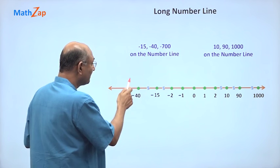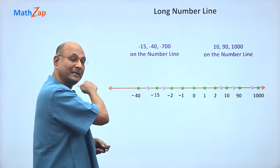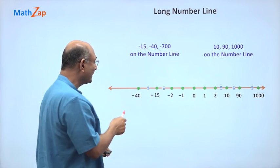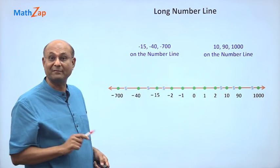What about minus 700? Minus 40, minus 50, minus 60, minus 70. If you keep going, minus 700 will come way down. So we put a break and we put minus 700.